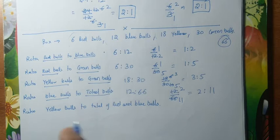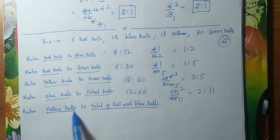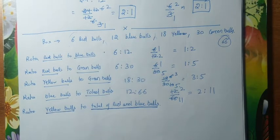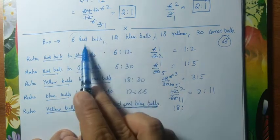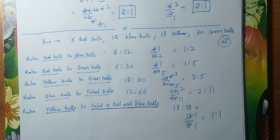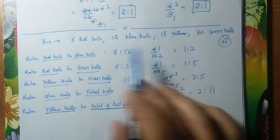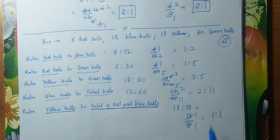Another question: ratio of yellow balls to the total of red and blue balls. Yellow balls we know: 18. Total of red and blue balls: 12 + 6 = 18. So 18 by 18, which simplifies to 1 : 1. The key point is: if you don't know a value, first calculate it, then find the ratio.